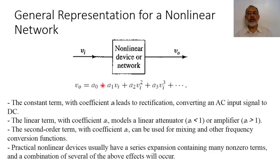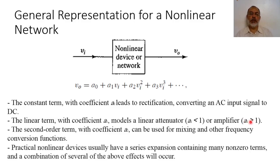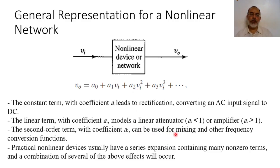The constant term A0 leads to rectification — if I have an AC or RF signal, the rectified component corresponds to A0, which converts the AC component to a DC signal. The linear term with coefficient A1, if greater than unity, represents amplification; if less than unity, it represents attenuation. The second-order term with coefficient A2 represents the squared value and is basically used for frequency mixing. Almost all microwave mixers depend on this second-order term, which is the core term for mixing and other frequency conversion functions.